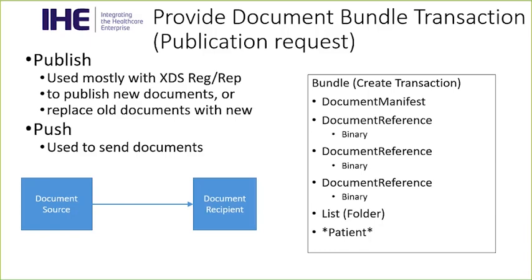The publication transaction is a bundle model of a create transaction. It includes one document manifest, which describes why the transaction is happening — who is the patient, why is this happening — building off the same model as a submission set in XDS. The document manifest is the equivalent of a submission set in XDS. Then there are one or more document references, which are the metadata describing the documents, one or more binaries which are the actual document content, and optionally a list resource equivalent to a folder, and sometimes a patient resource for push scenarios.